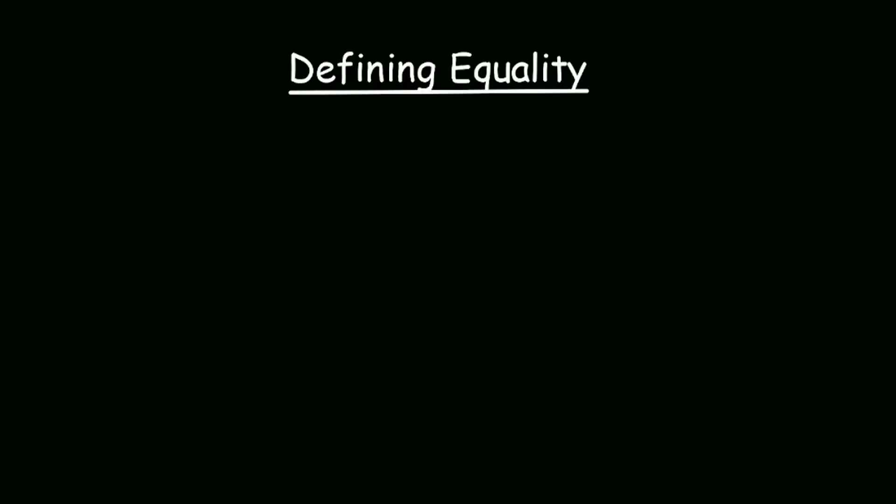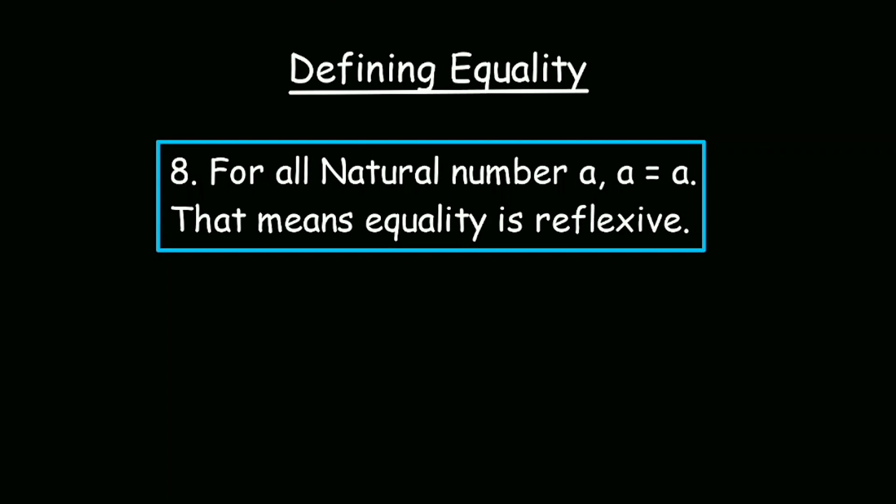Finally, we are going to define equality relation. We are going to use the following four axioms to define equality. For all natural numbers a, a is equal to a. That means equality is reflexive. The word reflexive is just a fancy way of describing this property. What is an example of a relation that is not reflexive? Both greater than and less than relations are not reflexive, because a is less than a and a is greater than a are both false.